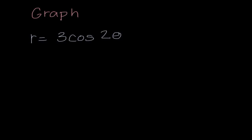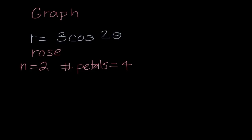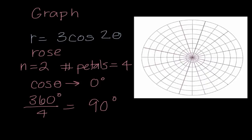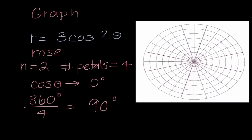For r equals 3 cosine 2 theta, this is a rose with n equals 2. Since n is even, the number of petals is 4. Since it's cosine, the first petal is at 0 degrees. I do 360 divided by the number of petals to find 90 degrees between petals. If it were sine I would use 90 divided by n for the first petal location. The coefficient 3 means I go out 3 for each petal. I plot petals at 0°, 90°, 180°, and 270°, each going out 3 units, then sketch the rose.